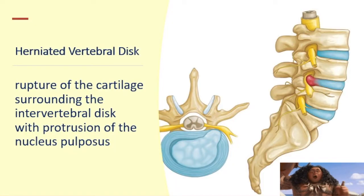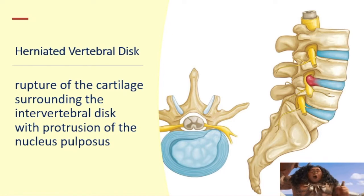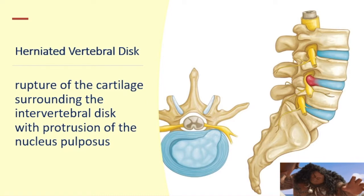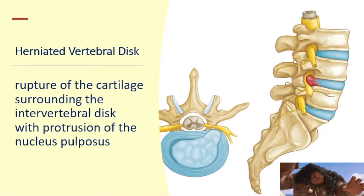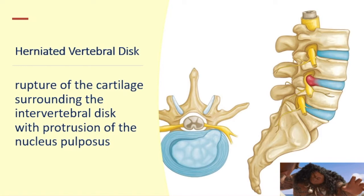It is the rupture of the cartilage surrounding the intervertebral disc that results in the protrusion of the nucleus pulposus. Once there is a rupture of this cartilage, the nucleus pulposus goes out of that space, hence the condition is referred to as herniated vertebral disc. One of the concerns in herniation of the vertebral disc is the possible compression of the spinal nerve, leading to manifestations such as pain and weakness.